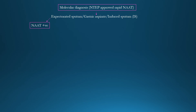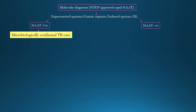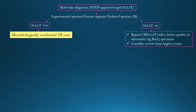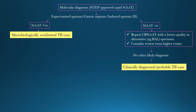If the molecular test is positive, label the patient as microbiologically confirmed tuberculosis. If negative, repeat the CB-NAAT with a better quality or alternative sample such as bronchoalveolar lavage, and consider review from a higher center. If the repeat sample is also negative with no other likely diagnosis on further clinical and laboratory investigation, label the patient as clinically diagnosed or probable tuberculosis.